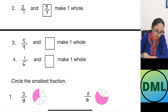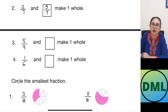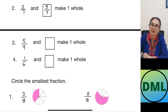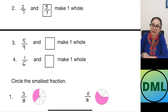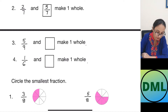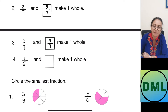Now let's see one more example. 5 by 9 and dash make 1 whole. So out of 9 parts, 5 parts are shaded. The unshaded parts are 9 minus 5, which is 4. So 4 parts are unshaded. I will write down 9 in the denominator because there are 9 total parts, and 4 in the numerator for the unshaded parts.